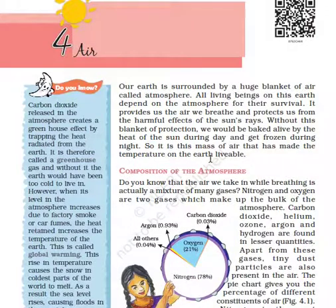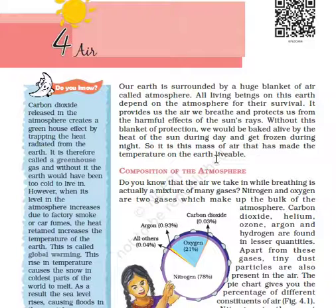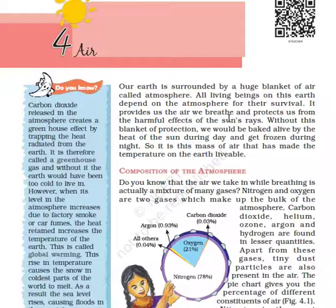Okay, class 7, geography chapter number 4: Air. Our earth is surrounded by a huge blanket of air called atmosphere. You are already aware of atmosphere — you have read about it in science also. All living beings on this earth depend on the atmosphere for their survival.